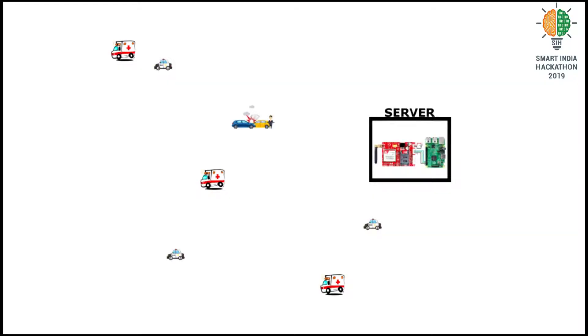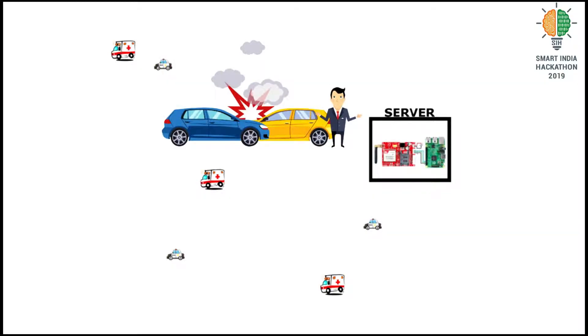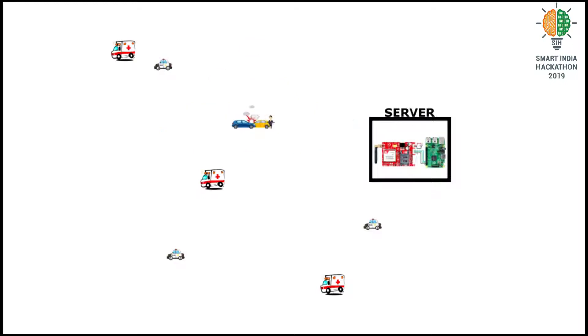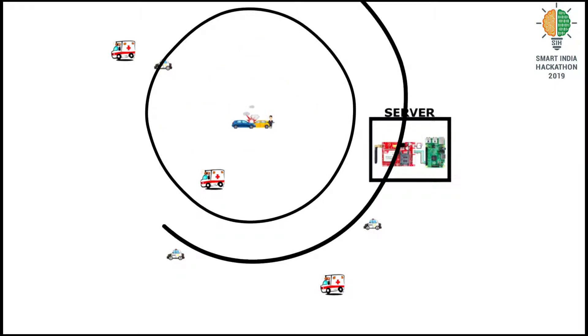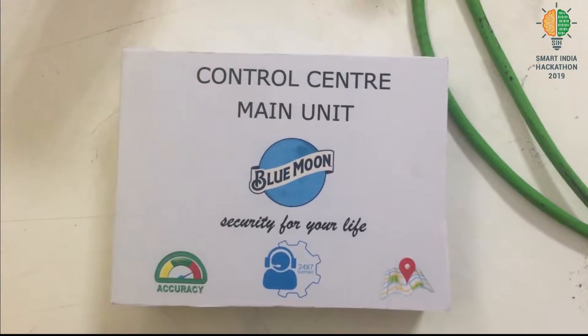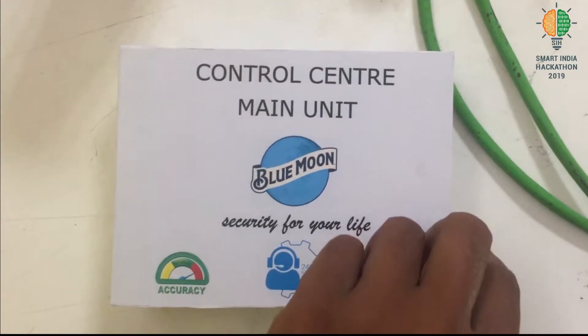The given problem statement is to detect accidents and send alert messages to all nearby GPS-enabled ambulances and police control rooms. In our project, whenever some accident occurs, we will be finding nearby ambulances and police control rooms that are near the accident area by using some suitable algorithm. This is the main control unit, which is also known as the server.